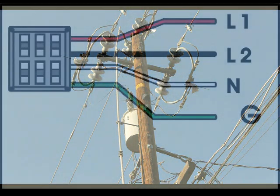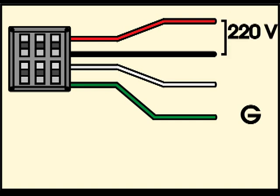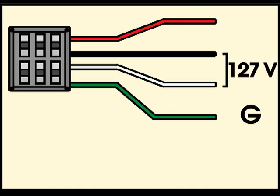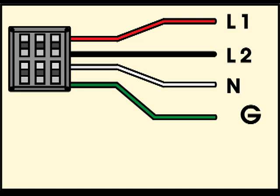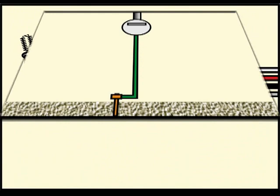There is often confusion between the purpose of neutral and grounding cables in domestic installations. The explanation is simple: the neutral wire is needed to have two voltages, 220 and 127 volts. The earth is for protection against atmospheric discharges and phase unbalances.